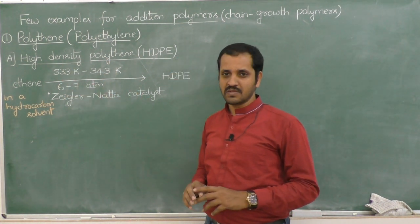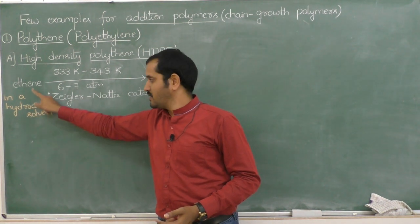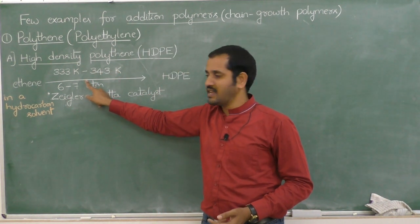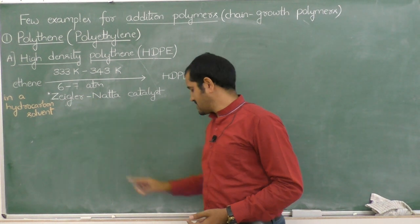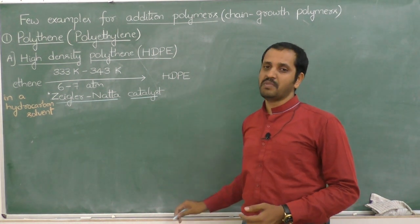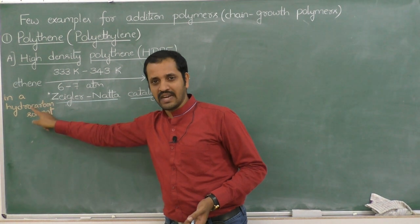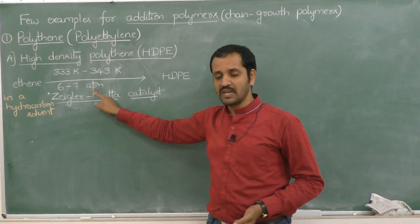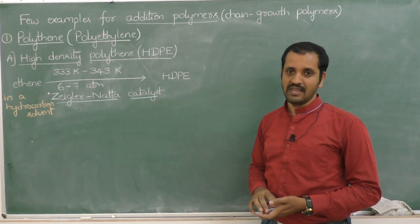HDPE is obtained when ethene is subjected to polymerization in a hydrocarbon solvent at a temperature of 333 to 343 Kelvin and a pressure of 6 to 7 atmospheres, in the presence of Ziegler-Natta catalyst.